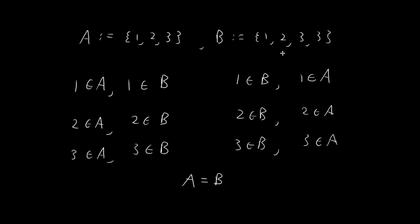What this shows is that a set does not care about repeated elements. The repetition of 3 does not affect the status of 3 being an element of B. So if you see two sets and want to determine whether they're equal or not, just disregard any repeated elements and compare what remains. If all the elements in A are in B, and all the elements in B are in A, then the two sets are equal.